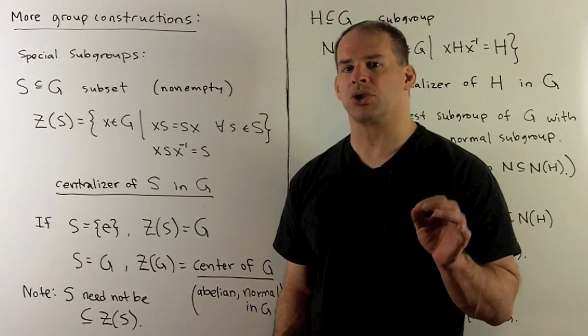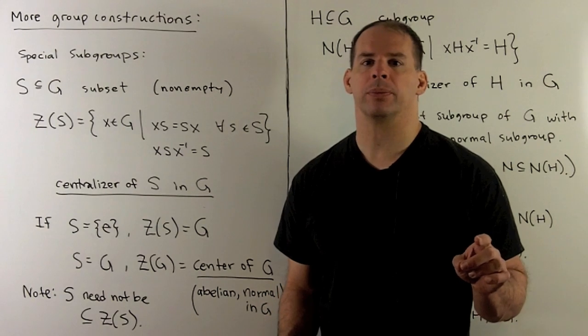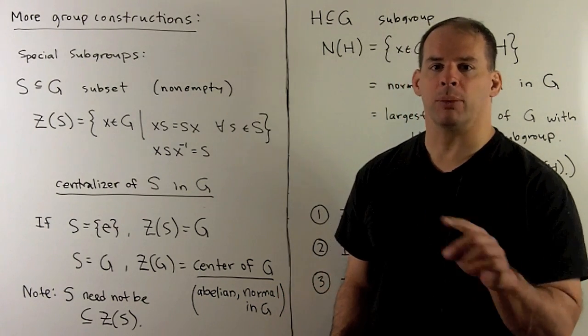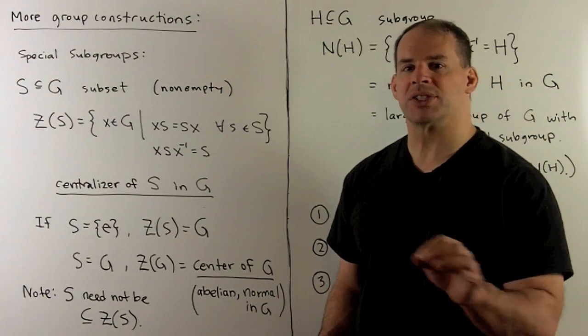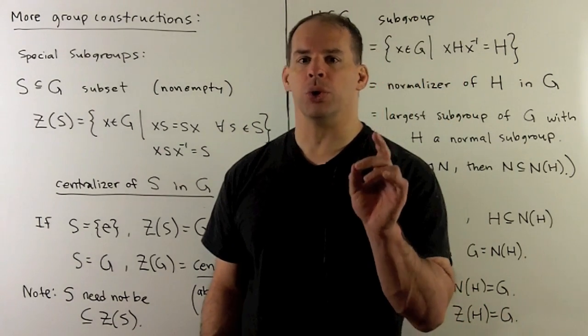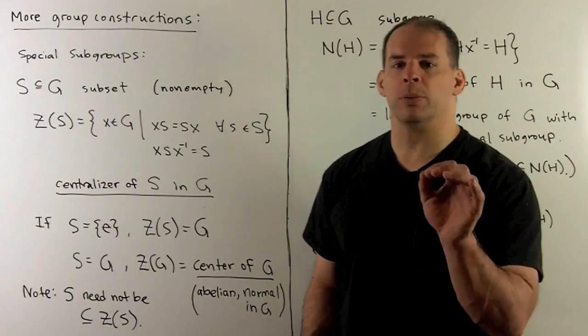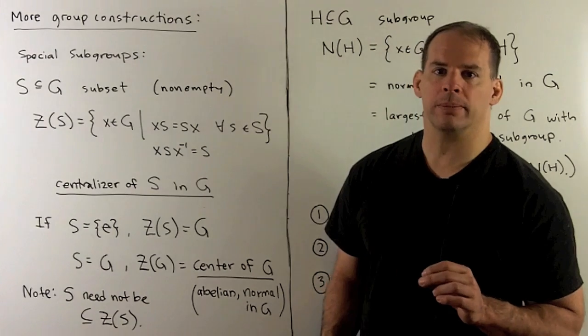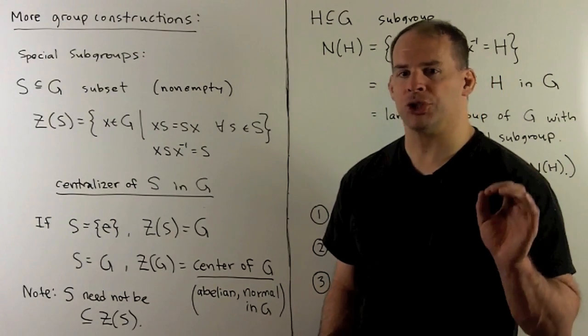In our search for methods to construct new groups from old groups, we've considered subgroups - groups inside of larger groups - and quotient groups, which are groups modulo normal subgroups. Let's look at some more constructions.